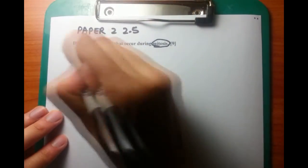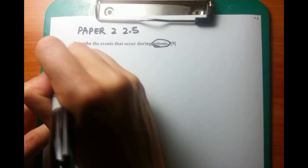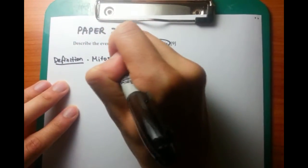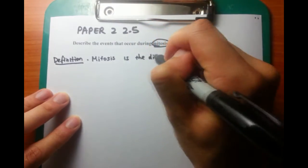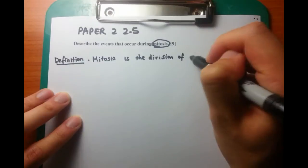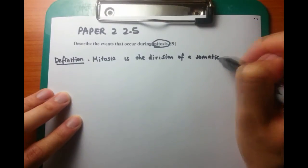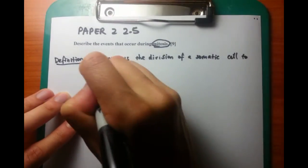we're always going to start off with a definition. What is mitosis? So mitosis is a process within the cell that results in the division of a mother cell to produce two identical daughter cells. So these daughter cells are exactly the same, or theoretically meant to be, exactly the same as one another.